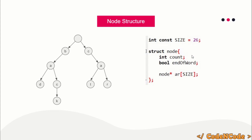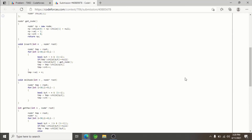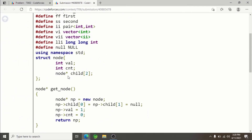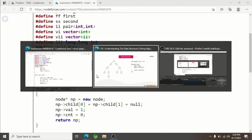The end-of-word field represents whether a node marks the end of an inserted word. For example, 'd' is the end of 'bad' and 'k' is the end of 'back', so their end-of-word boolean is true. 'c' is not the end of any word, so its end-of-word is false. We've only inserted 'bad', 'back', 'car', and 'cat' here. For a binary trie, the array size would be 2 instead of 26, since there are only two unique characters: zero and one.